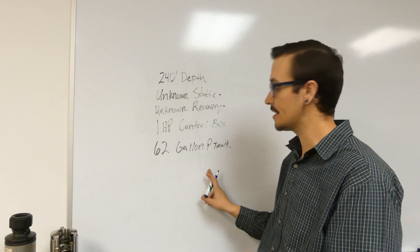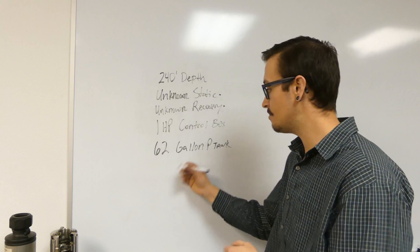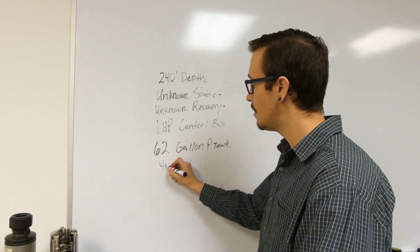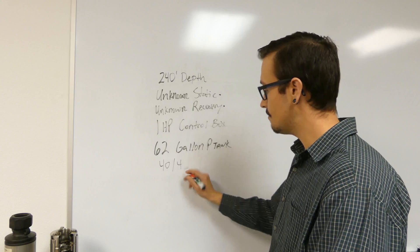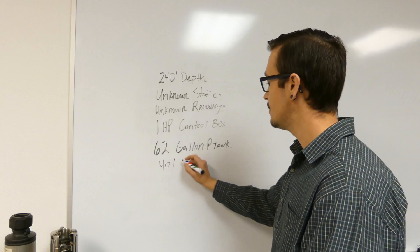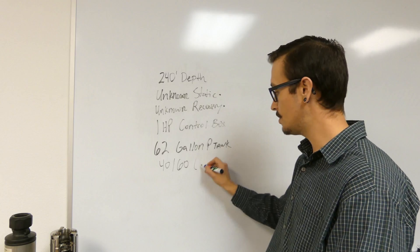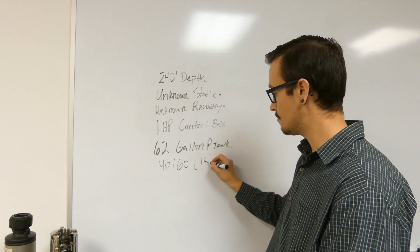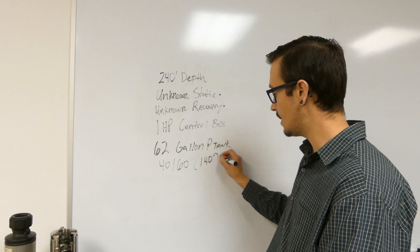So the first thing that we want to do to get us a little bit more information - let's check the pressure in this pressure tank. It's 38 PSI, so we know we're on a 40-60 system, which equals 140 feet of head.